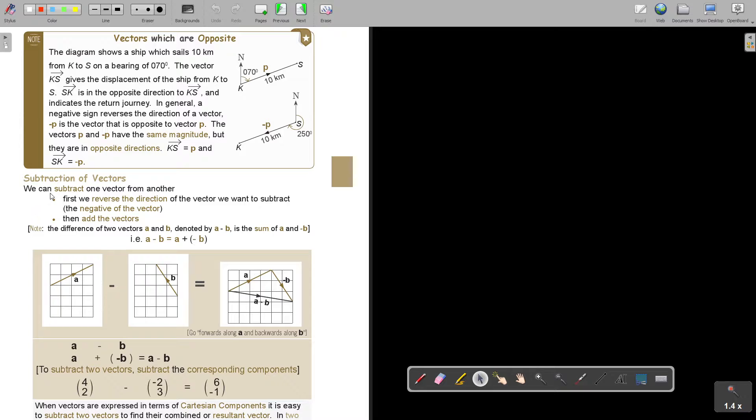Now, subtraction of vectors. We can subtract one vector from another. First, we reverse the direction of the vector we want to subtract, the negative of the vector, then add the vectors. Note, the difference of two vectors, A and B, denoted by A minus B, is the sum of A plus negative B. So it's actually just A plus the negative B. There's A minus this B. But look what I do. There's A, I reverse that direction, and then I make it negative B.